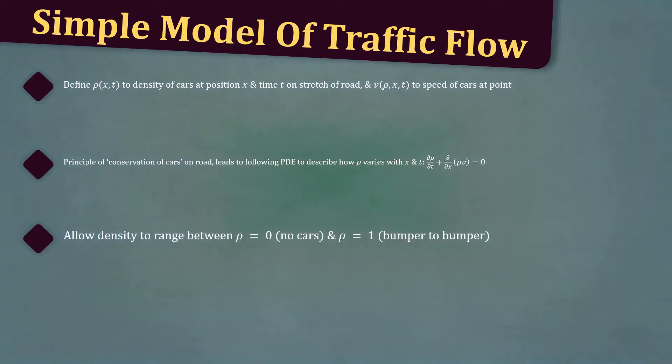For our simple model, we allow the density to range between ρ equals zero, where there are no cars, and ρ equals one, where the cars are bumper to bumper. The speed of cars is assumed to be dependent only on the local value of ρ.